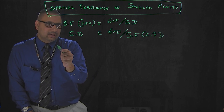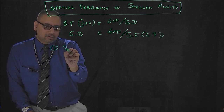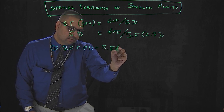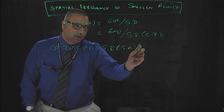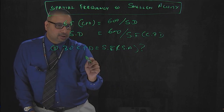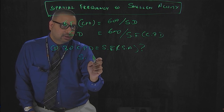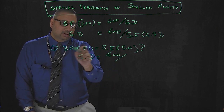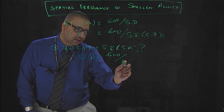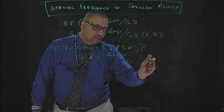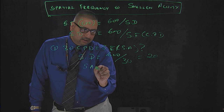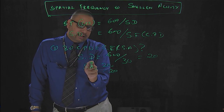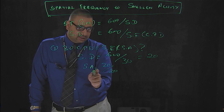Let's take an example. Say a patient has a spatial frequency of 30 cycles per degree and you want to know the Snellen equivalent. You want to know what is the Snellen equivalent of 30 cycles per degree. The Snellen denominator is 600 divided by the spatial frequency, which is 30. 600 divided by 30 gives you 20. So the Snellen acuity would be 20/20 for a spatial frequency of 30 cycles per degree.